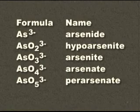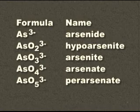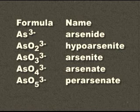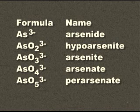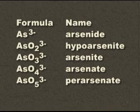For example, AsO4 is arsenate. Unlike the nitrogen example, four oxygens do not make a perarsenate. Notice that the adding and subtracting of one oxygen still applies. AsO5 is perarsenate, AsO3 is arsenite, and AsO2 is hypoarsenite. Also note that As is still arsenide because it does not have any oxygen.